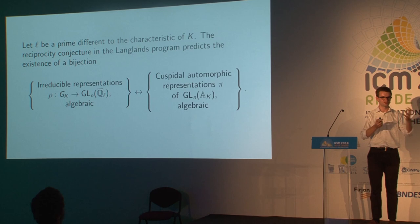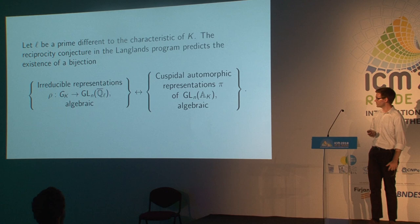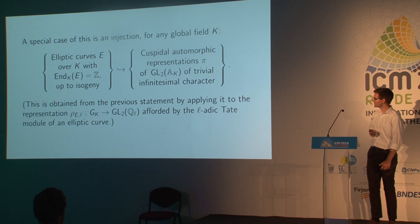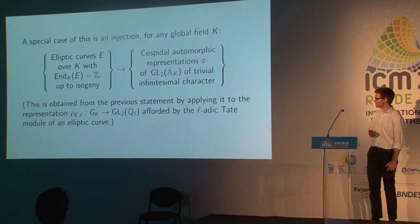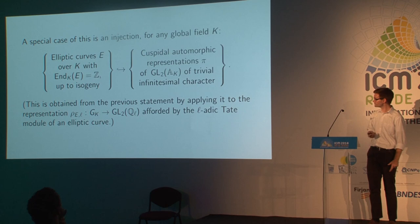On both sides of this bijection, I've put the restriction 'algebraic.' It's important to restrict to algebraic Galois representations and algebraic automorphic representations. Just to convince you that this is related to arithmetic, here's one consequence of the reciprocity conjecture: a description of elliptic curves over any global field in terms of a subclass of automorphic representations. The reason this is implied by the previous conjecture is that whenever you have an elliptic curve with scalar endomorphisms, you get an irreducible representation on the Tate module, which then determines the elliptic curve up to isogeny.